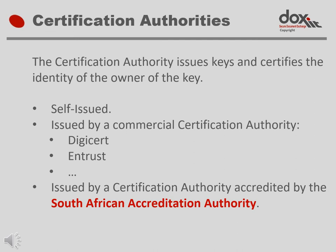Let's have another look at certification authorities, or certification service providers as they are called in the ECT Act. The certification authority issues encryption keys in the form of certificates, and in the process certifies the identity of the person to whom they were issued. It is possible to generate one's own certificate, but of course no one else will have any reason to trust such a self-issued certificate. There are commercial certification authorities from which one can buy a certificate, and anyone who trusts the certification authority can also trust the information associated with the certificate, such as the owner's name and the expiry date.